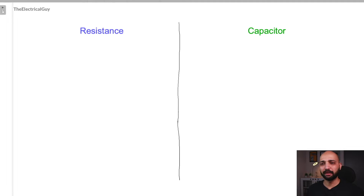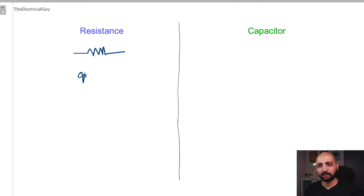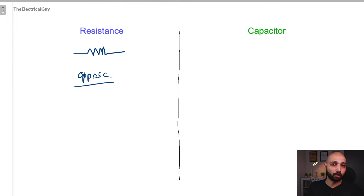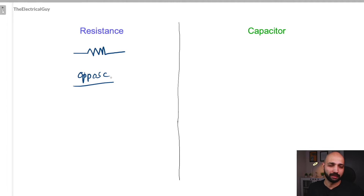Let us start by understanding resistance. Resistance is a pretty simple device and what it does is it simply opposes the flow of current. This opposition is not affected by the magnitude of the current, whether it is a constant current or an alternating current — it really doesn't matter. The resistor is simply going to oppose the current flowing through it by dropping the voltage, which is proportional to the current flowing through it. That is the reason why voltage and current in a resistive circuit are perfectly in phase with each other.